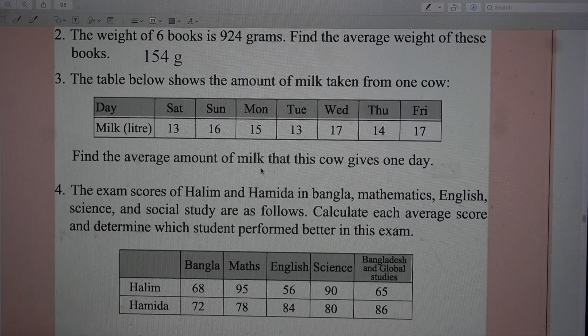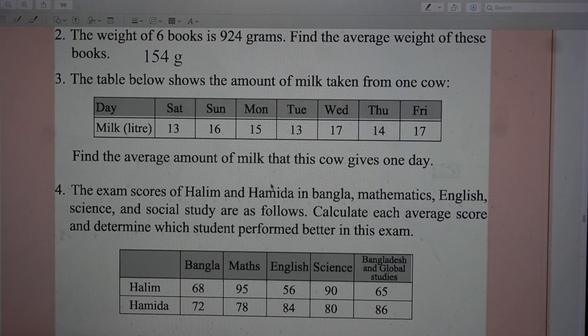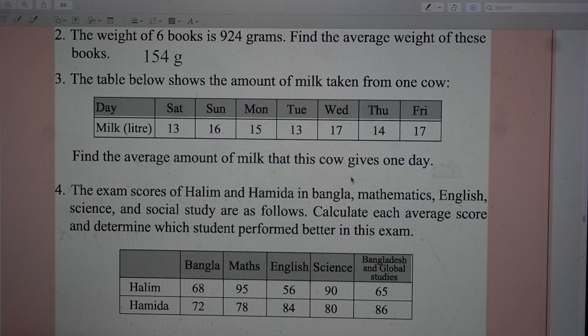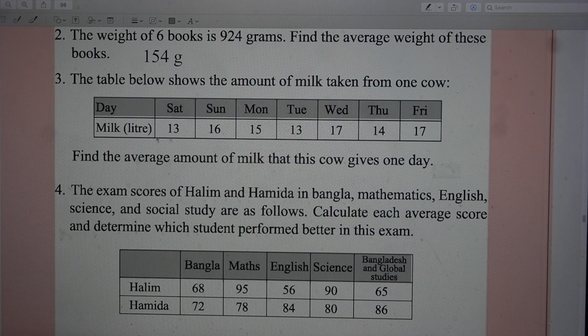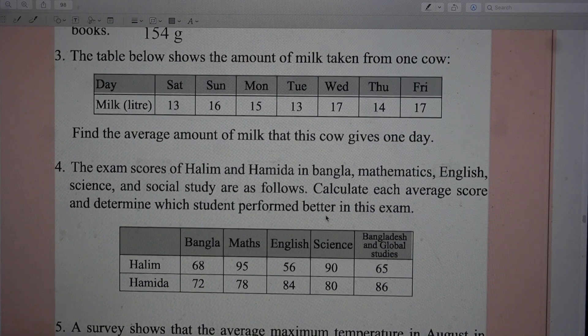The table below shows the amount of milk taken from one cow. Find the average amount of milk that this cow gives one day. How many number of days? 1, 2, 3, 4, 5, 6, 7. Add them up, divided by 7 gives you the answer.